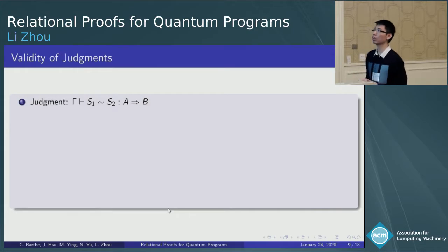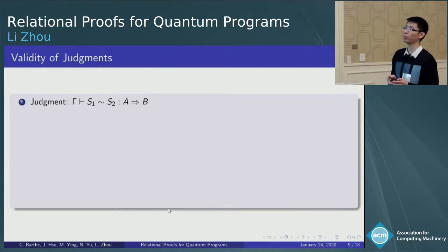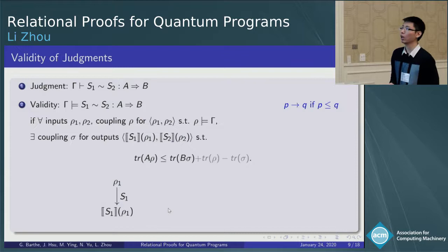The judgment in our logic is formed like this, with a side condition gamma on the left, and the two programs S1 and S2 we want to compare in the middle, and the precondition A and the postcondition B.